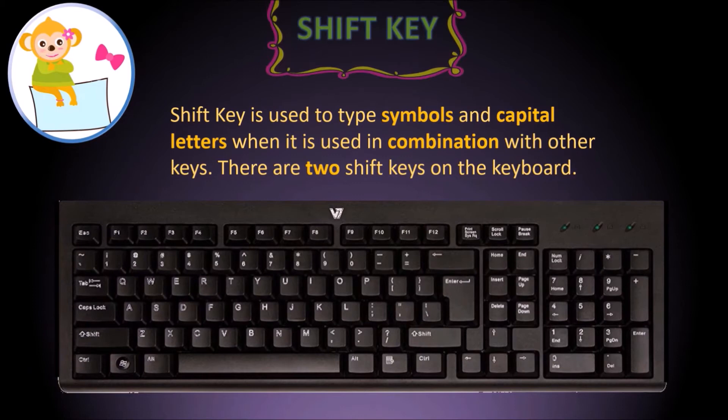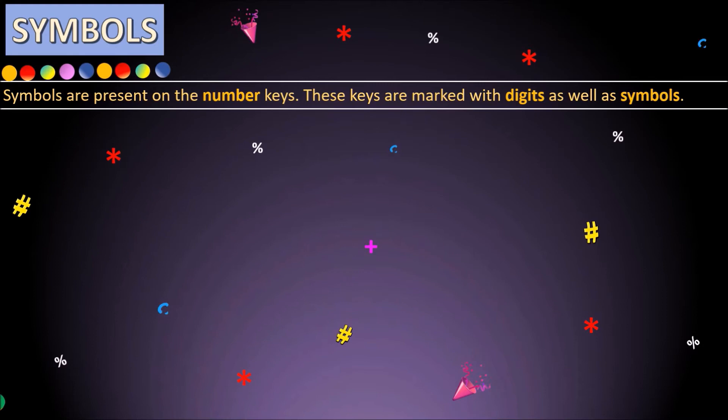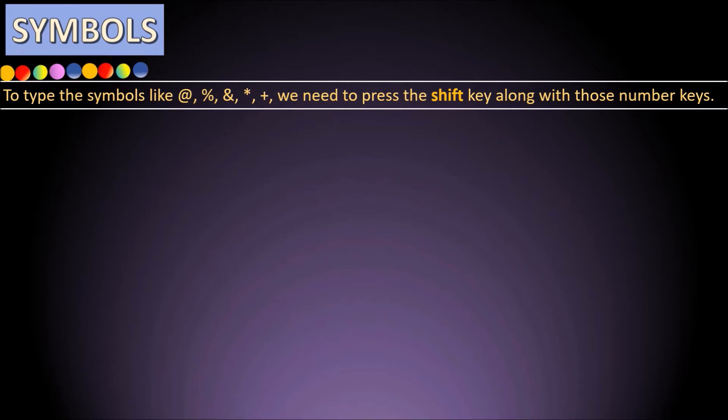The Shift key is used to type symbols and capital letters when used in combination with other keys. There are two Shift keys on the keyboard — find them out for yourself. Symbols are present on the number keys. These keys are marked with digits as well as symbols. To type symbols like the at sign, percent, and ampersand, press the Shift key along with those number keys.